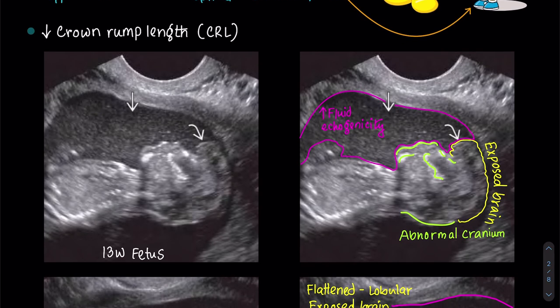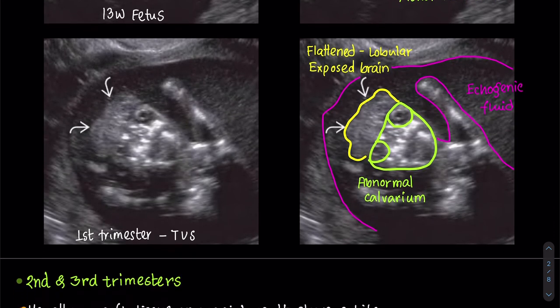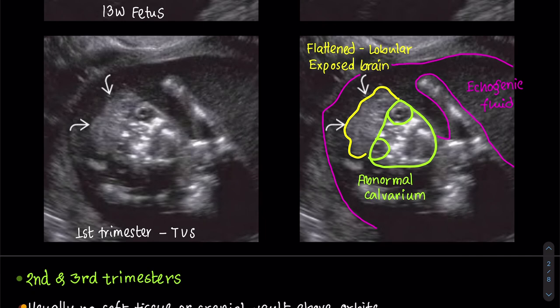This sagittal ultrasound of a 13-week fetus with exencephaly shows no normal cranium and lobular exposed brain. As brain tissue erodes, the appearance changes from exencephaly to anencephaly. Note the increased echogenicity of the amniotic fluid due to dissolved neural tissue within it. This transvaginal ultrasound of a first trimester fetus with exencephaly shows a flattened lobular appearance of the exposed neural elements.